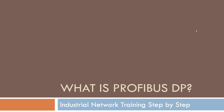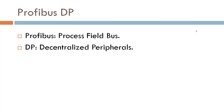So what is PROFIBUS DP? PROFIBUS stands for Process Field Bus, and DP means Decentralized Peripherals. We will explain what that means and why we name it like that — this is going to be very important to know.